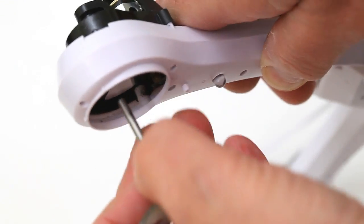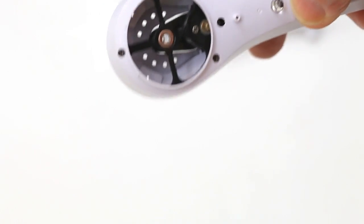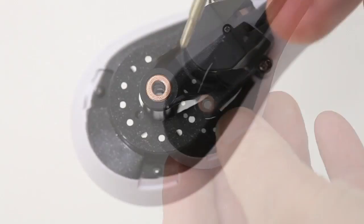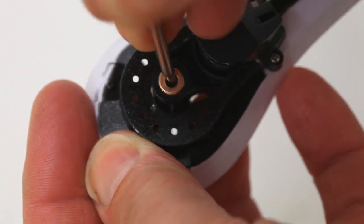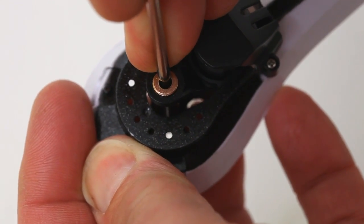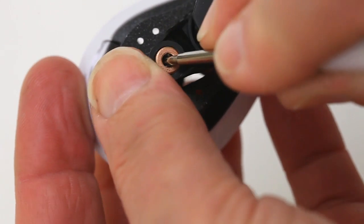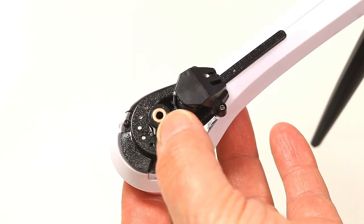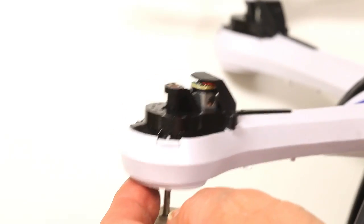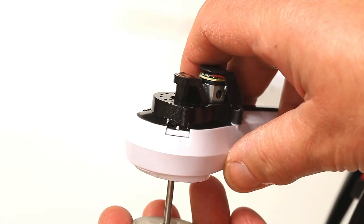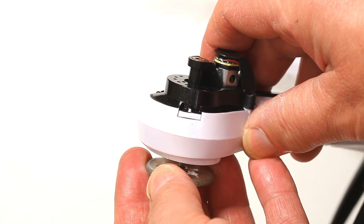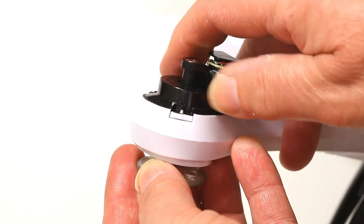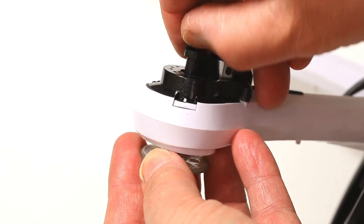You can see the bushing there. Using the screwdriver again, just gently tease these out. Another technique for getting the bushings out is if you slide the gear back in, put a little bit of pressure either down or up, and just push there.